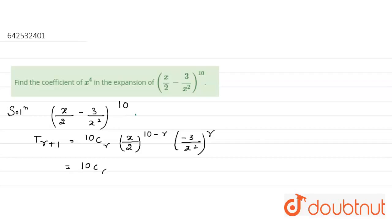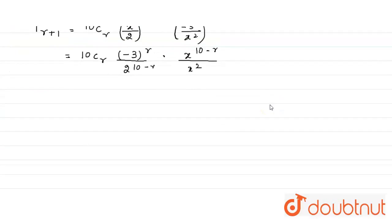Now, I am taking the base x on one side and the constant on the other side. So it will be (−3)^r divided by 2^(10−r), and here x^(10−r) from the first part and x^(2r) from the second part. Simplifying the exponent of x: 10 − r − 2r gives 10 − 3r.